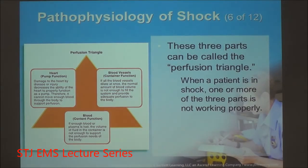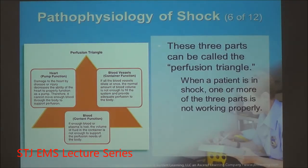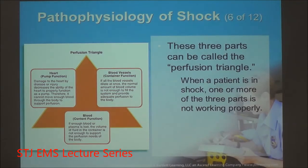If blood vessels cannot be regulated correctly and they dilate — as seen in disease states like anaphylaxis, sepsis, and neurogenic shock — the vessels open up, we end up with more flow but less pressure. Poiseuille's law states that a narrower container increases pressure, so a wide unregulated vessel causes a drop in blood pressure.